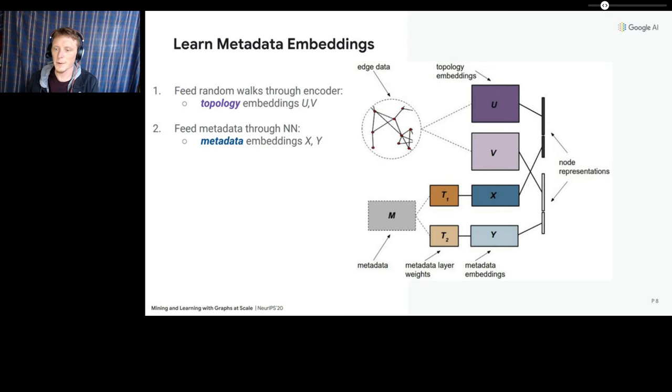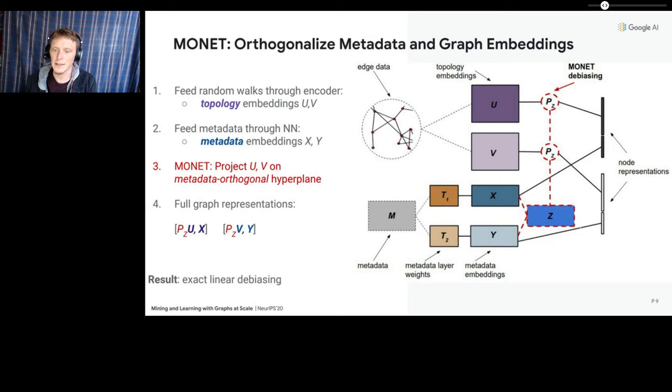This brings me to the second part of our solution, which is to orthogonalize the topology embeddings away from the metadata embeddings during training. At every training step, we project the topology embeddings onto the null space of the metadata, which results in exact linear debiasing. We also include a tuning parameter bounded in the range from 0 to 1, which corresponds to the level of the projection. So this constitutes our complete debiasing approach, which we call MONET, for Metadata Orthogonal Node Embedding Training.